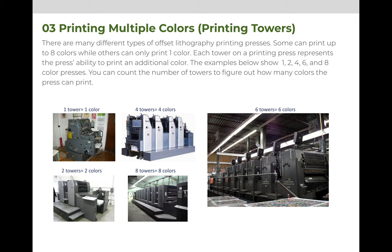There are many different types of offset lithography printing presses. Some can print up to eight colors, while others will only print one color. One way to tell how many colors a press prints is by looking at the printing towers. Each tower on a printing press represents the press's ability to print an additional color. So in the examples below, you can see that there is a one, two, four, six, and eight color press.